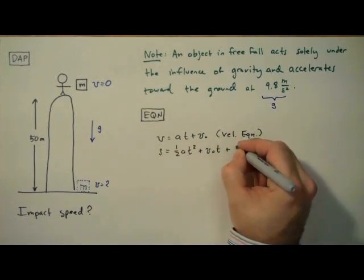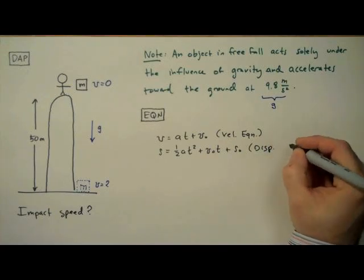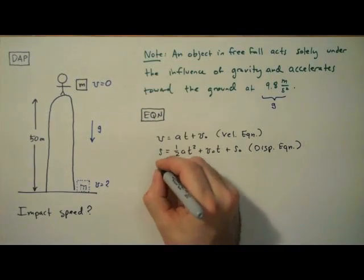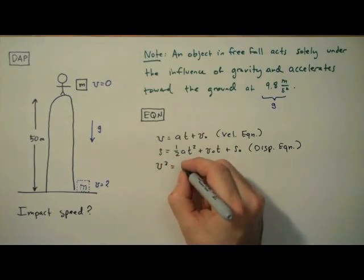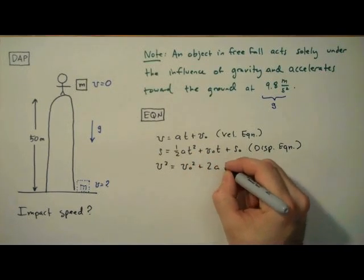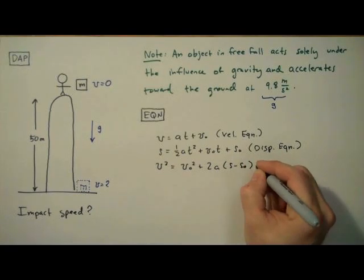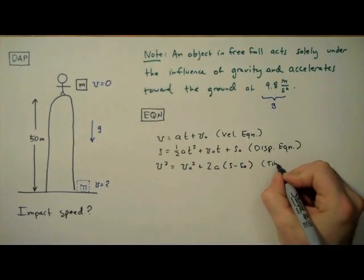Here, s represents displacement. And if we combine these two equations, we can get a third equation without t as a variable. And we call that the time-independent equation. These equations are so important to beginning physics students that you should memorize them, or at least have them written down somewhere where you can access them. Because you can analyze any situation that involves constant acceleration with just these three tools.